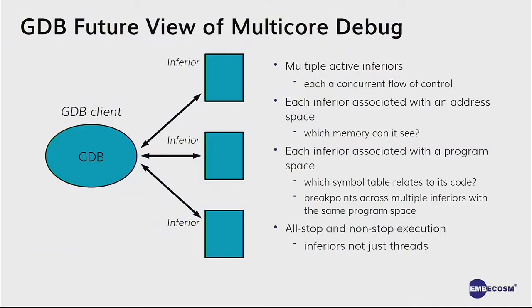There's been a lot of work — not RISC-V specific — to get a completely generic view of parallelism from a debug perspective, where these could be threads, processes, cores, or in RISC-V speak, harts. Multiple active inferiors can all be controlled at once. Each inferior has a flow of control, is associated with an address space telling it what memory it can see, and a memory map indicating whether it can read or write. This deals with architectures where individual cores have their own private memory as well as shared memory, which just doesn't fit a Linux model.